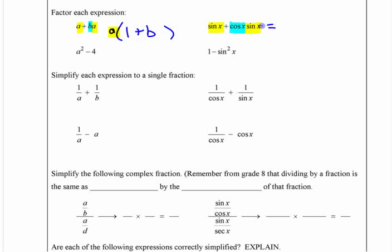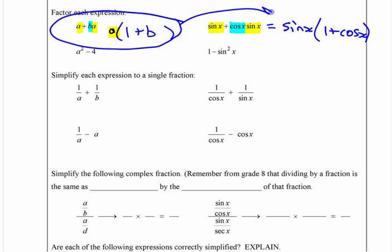So how could you write that expression? If you factored out that sine, you could put the sine x out here and put the rest in a bracket. One plus cosine, okay?